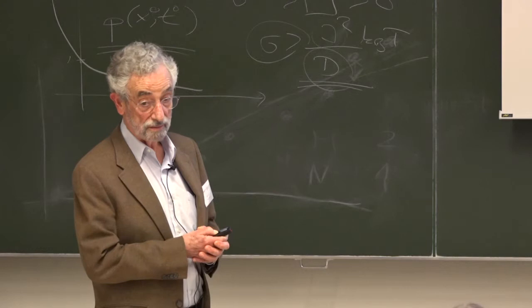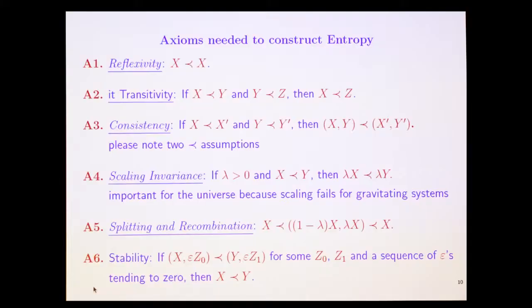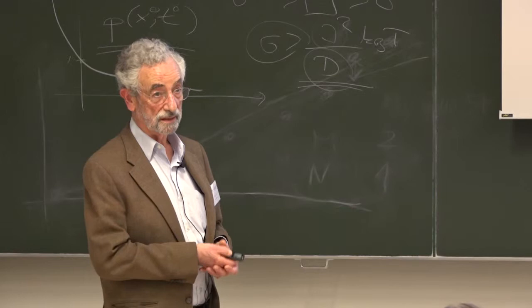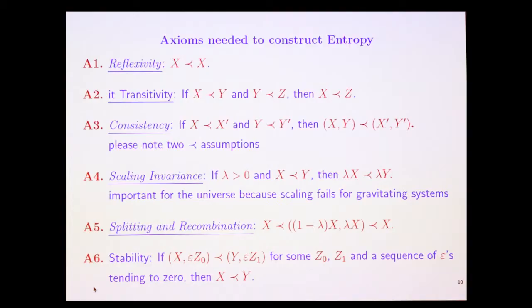So we're going to construct entropy with our bare hands. And here are the axioms we're going to need about equilibrium systems. A1: Reflexivity. X precedes X. Okay, that looks easy. A2: Transitivity. If you can go from x to y and y to z, then you can go from x to z. That's easy. You believe that.